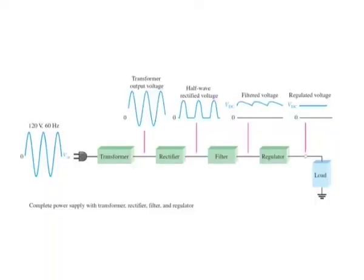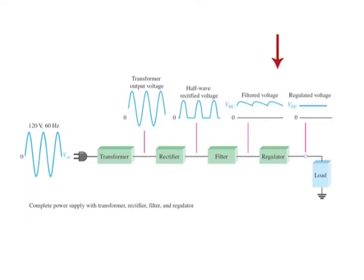If the secondary has more turns than the primary, the output voltage across the secondary will be higher and the current will be smaller. If the secondary has fewer turns than the primary, the output voltage will be lower and the current will be higher. The rectifier can be either a half wave rectifier or a full wave rectifier. The rectifier converts the AC input voltage to a pulsating DC voltage. The filter eliminates the fluctuations in the rectified voltage and produces a relatively smooth DC voltage. The regulator maintains a constant DC voltage for variations in the input line voltage or in the load. The load is a circuit or device connected to the output of the power supply.